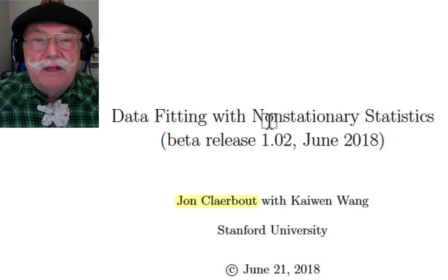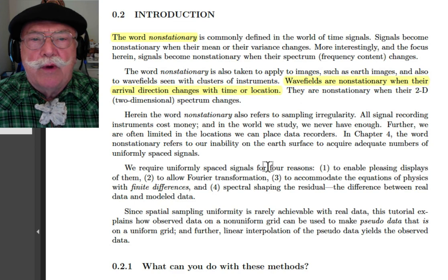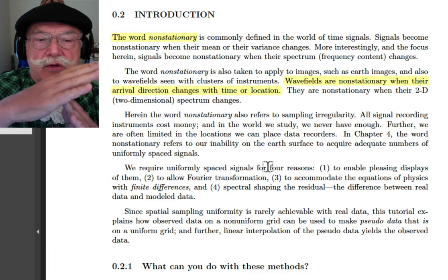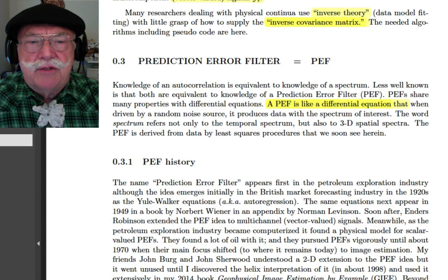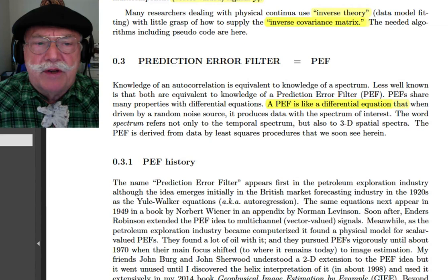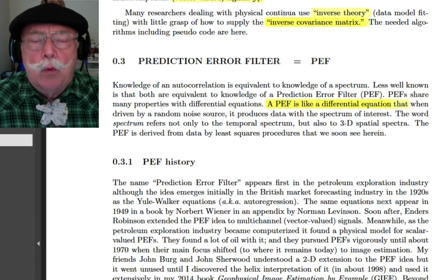Let's get started. The word non-stationary: wave fields are non-stationary when their arrival direction changes with time or location. Their spectrum changes with the angle of emergence of this wave. There's lots of things you can do with what I'm going to teach you. Many researchers use what they call inverse theory, in which they are expected to provide an inverse covariance matrix. Inverse theory doesn't teach you how to find the inverse covariance matrix, and that's one of the many things I'm going to do right here.